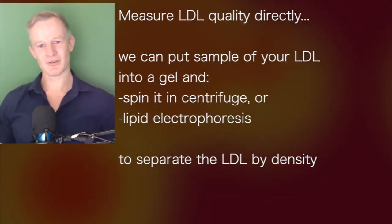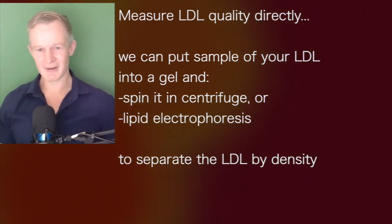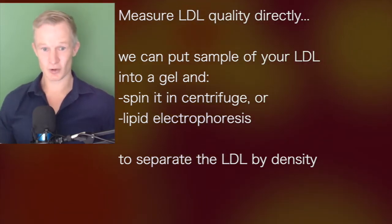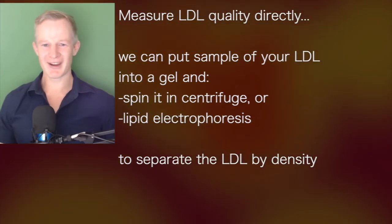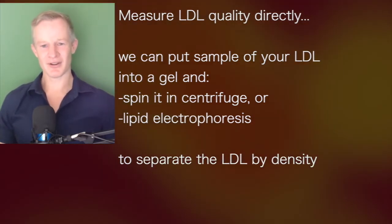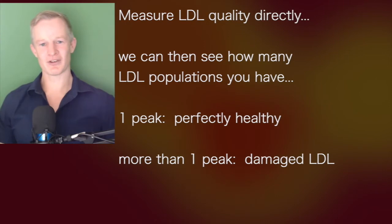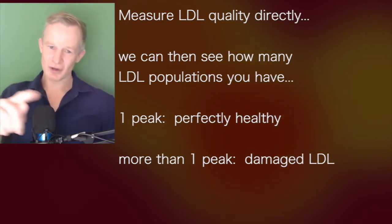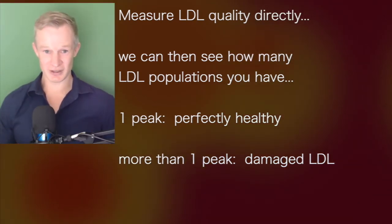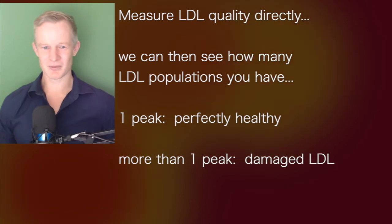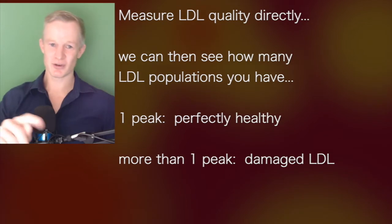We can put a sample of your LDL into a gel and either centrifuge it — spin it down — or apply a current through it, so-called lipid electrophoresis. Both measures reliably separate out the LDL based on density and size. We can then see how many different LDL populations you have. Normally you should only have one smooth peak — that's healthy, physiological LDL that's not going to harm you.